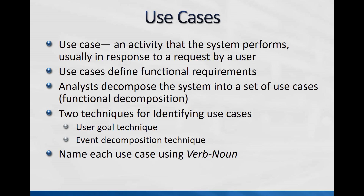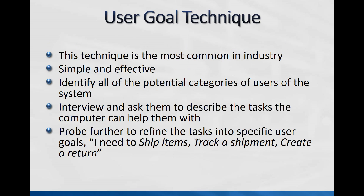We do this across industry — whether in information systems or looking at a business office. For example, from a user statement like 'I need to ship items, track shipments, and create a return,' that's really three different pieces. We try to break them down into a single set of activities — a verb and a noun. 'Do something' is the easiest way to think about it.